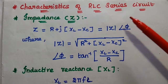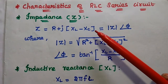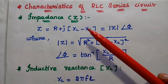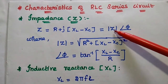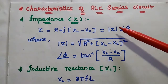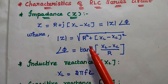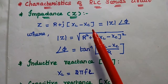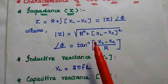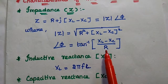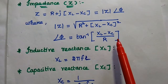Next, we discuss the characteristics of the RLC series circuit. The impedance Z = R + J(XL − Xc) in complex form, consisting of a real part and an imaginary part. It can also be represented in polar form as |Z|∠φ, where |Z| = √(R² + (XL − Xc)²) and the phase angle φ = tan⁻¹((XL − Xc) / R). This is very important for solving problems.